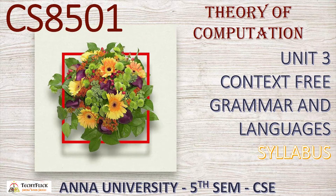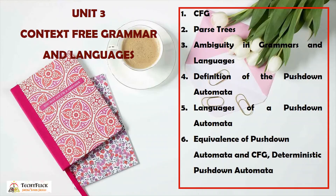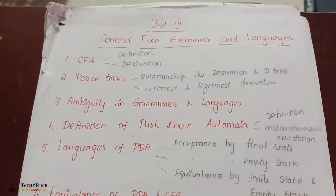CS8501 Unit 3: Context Free Grammar and Languages Syllabus. These are the 7 topics in Unit 3 — a detailed explanation for Unit 3 Context Free Grammar and Languages.